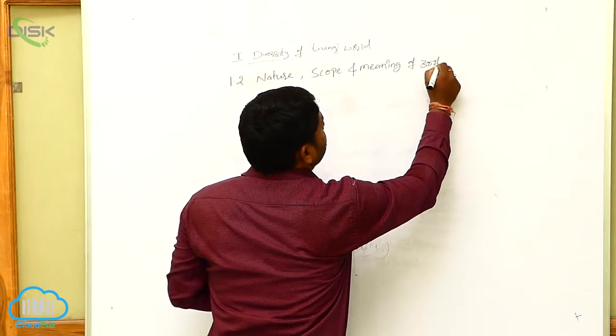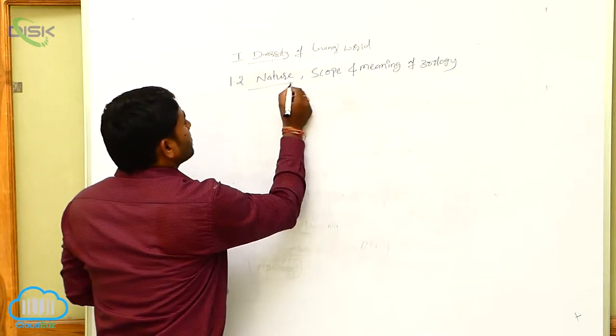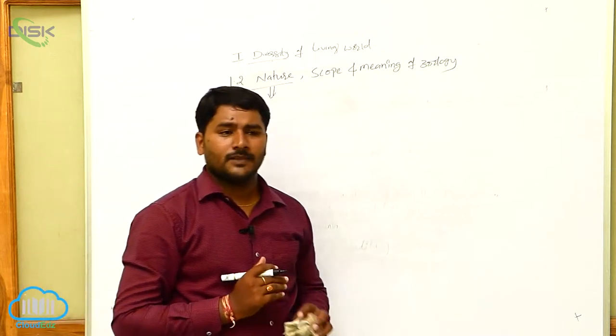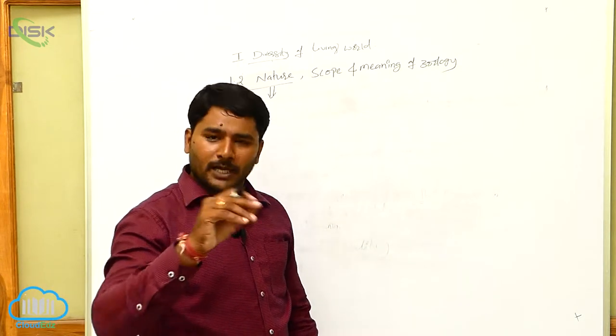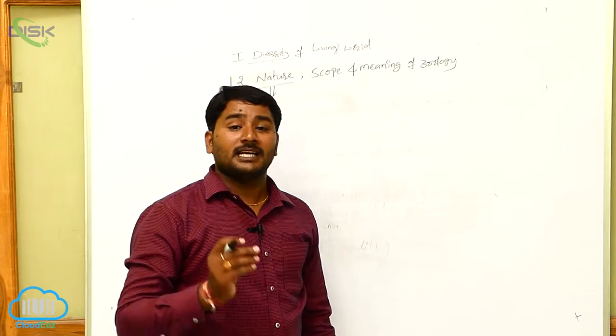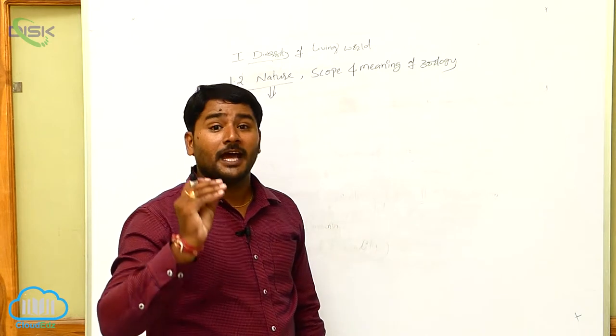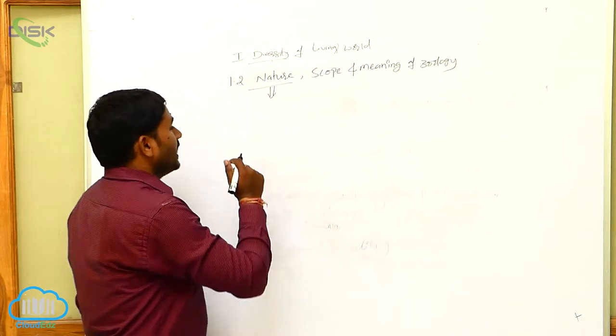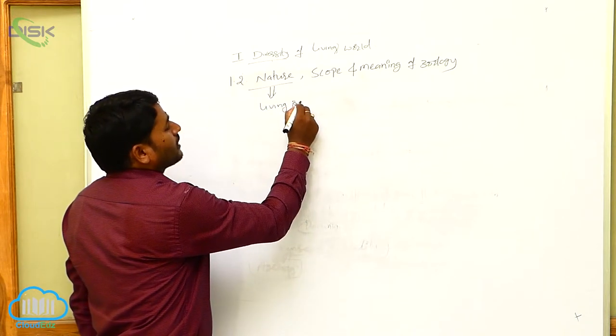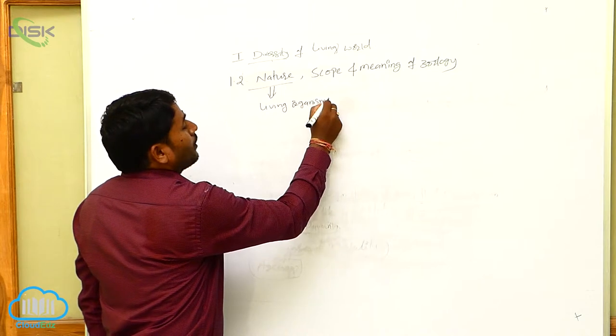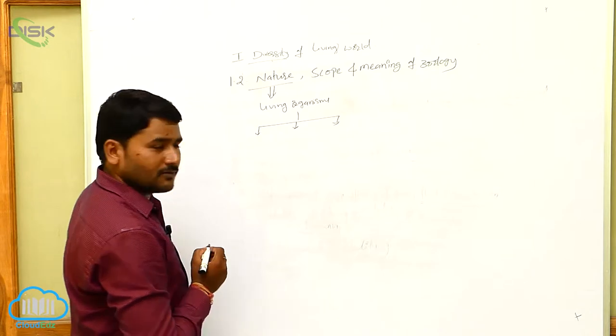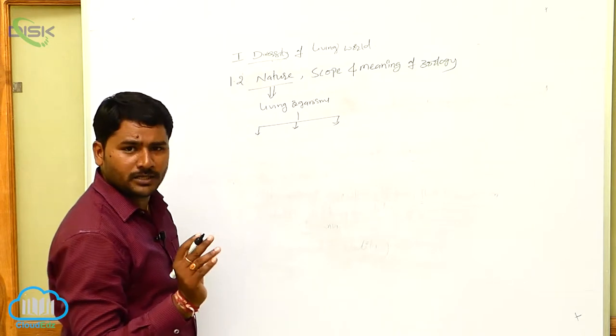See here, generally, nature of the zoology. Zoology is a branch of biology that deals with the study of animals. See here, generally, all the living organisms are classified into three groups, actually. All the living organisms are classified into three groups.